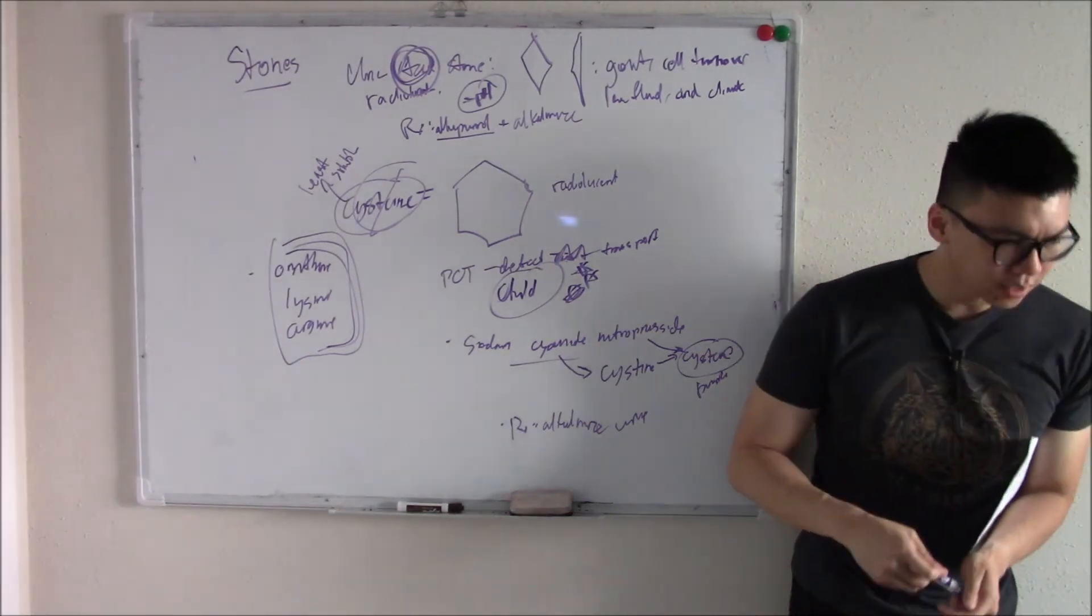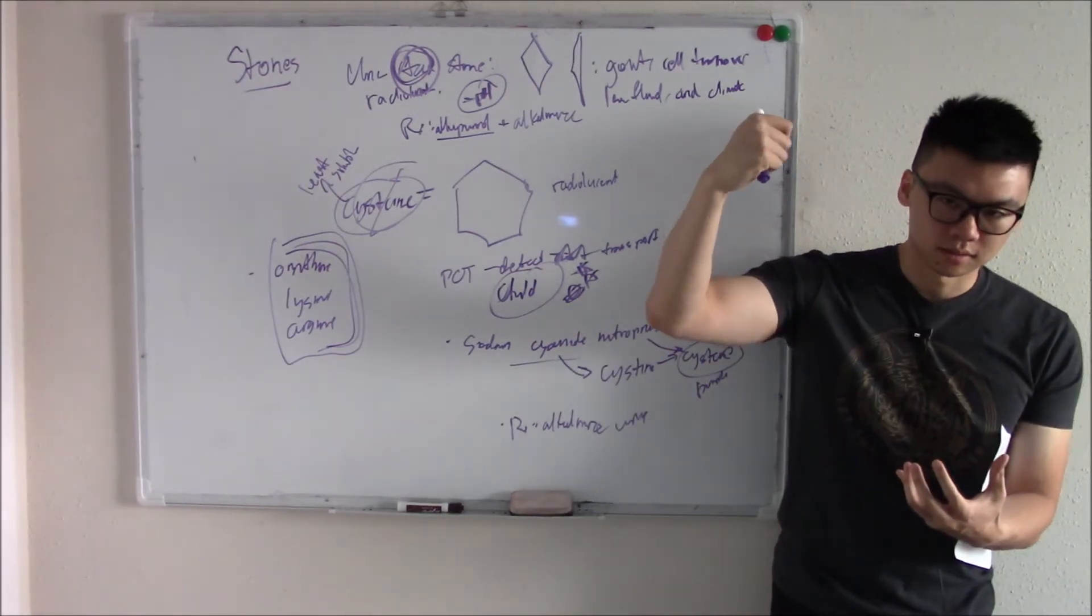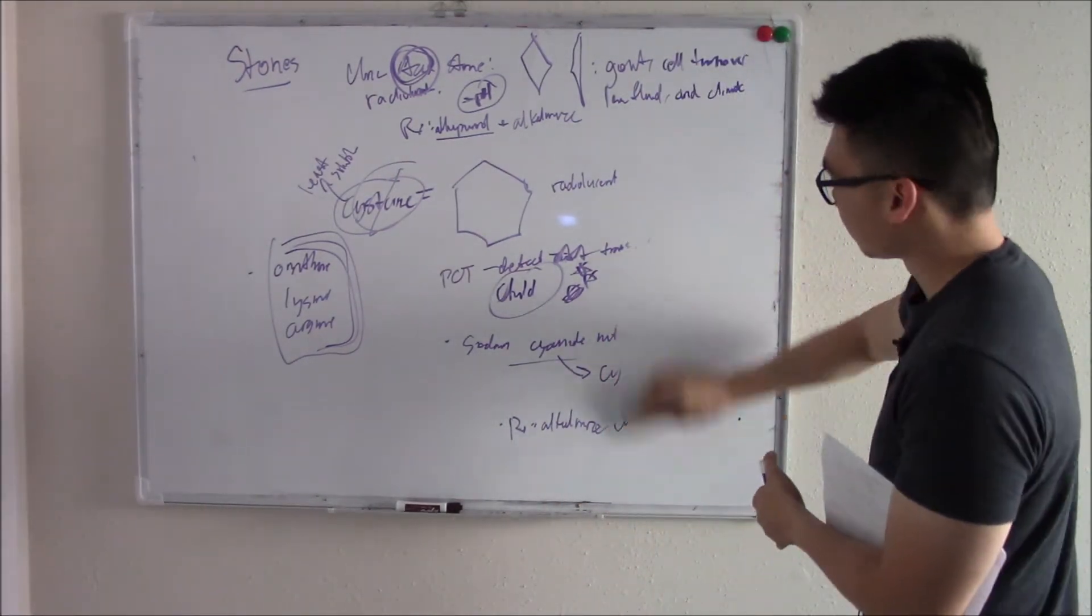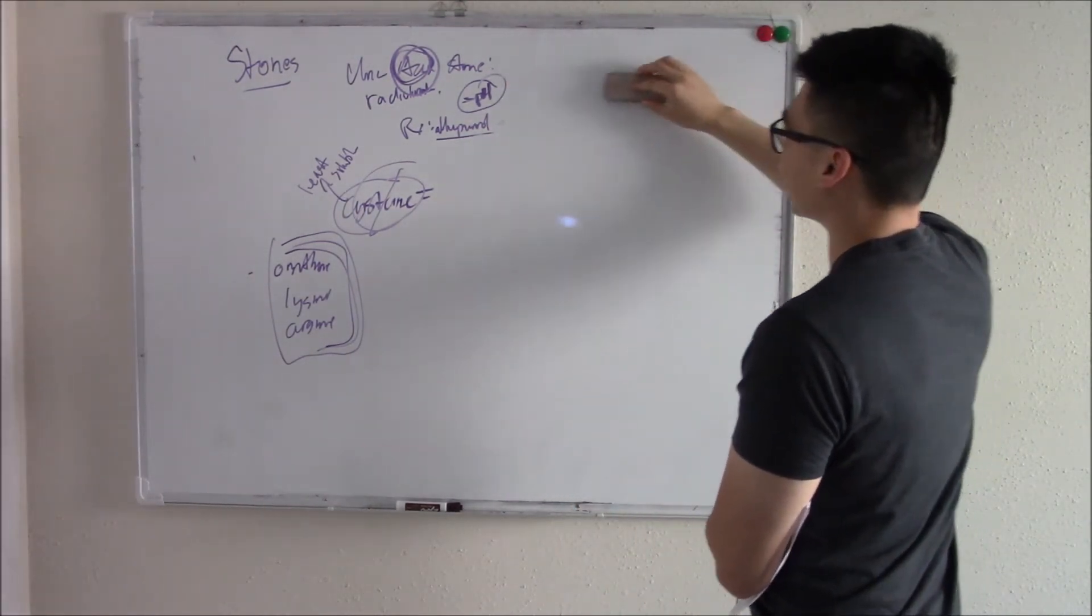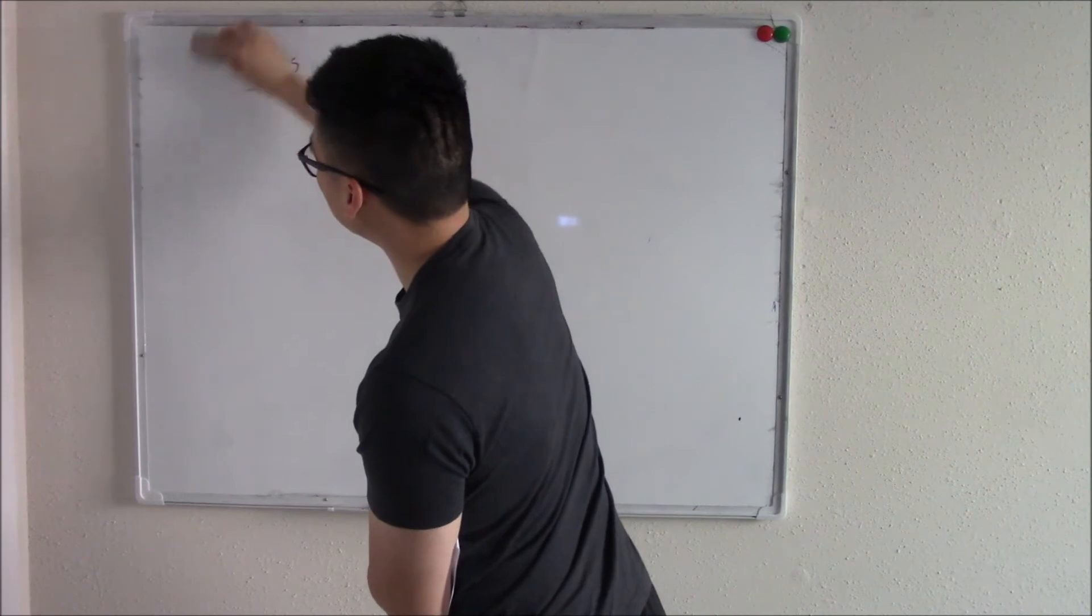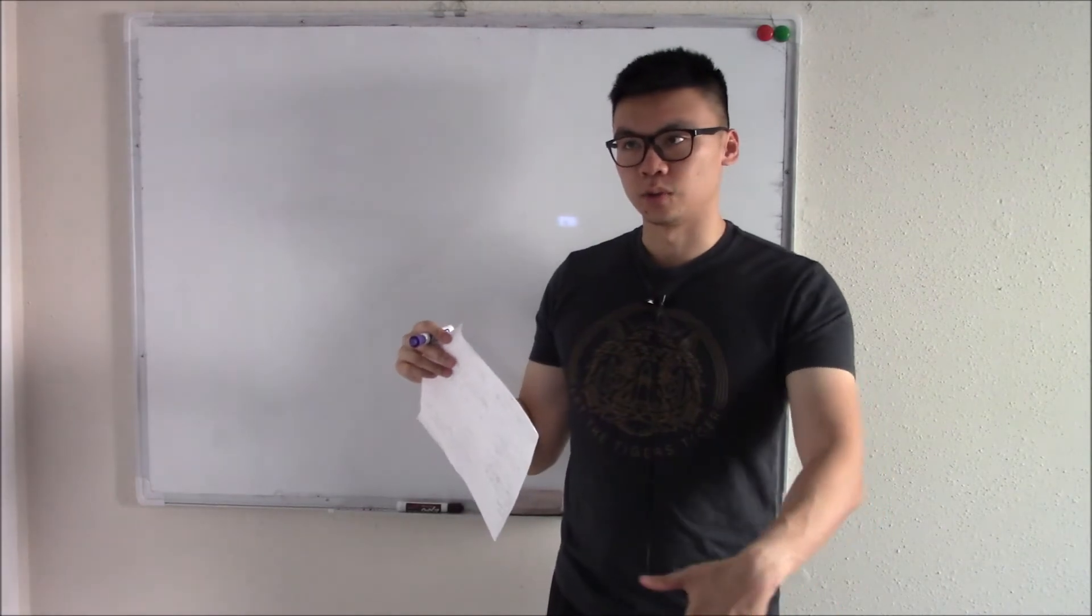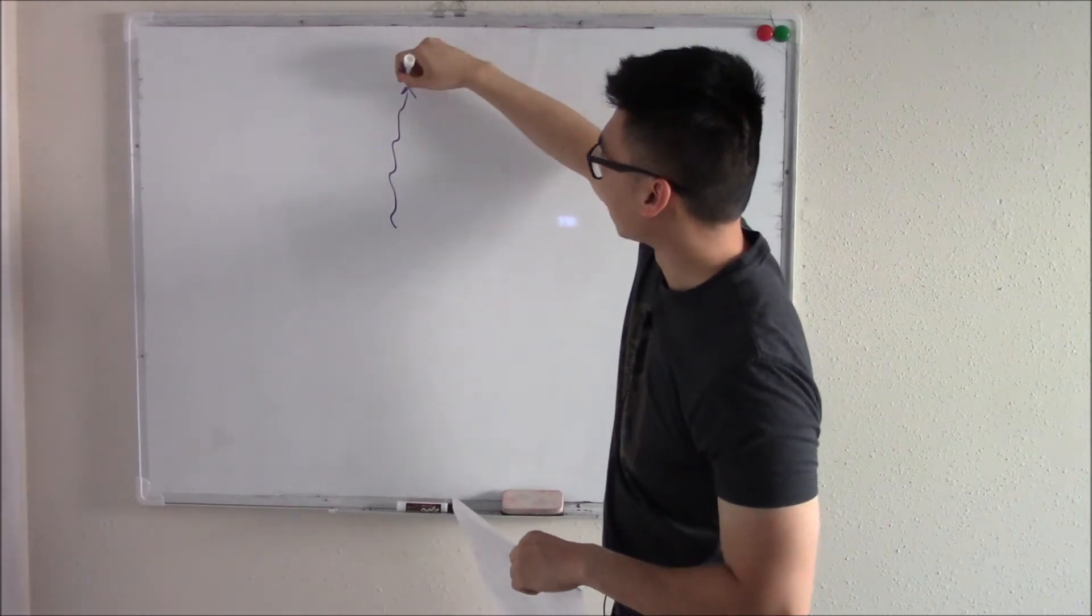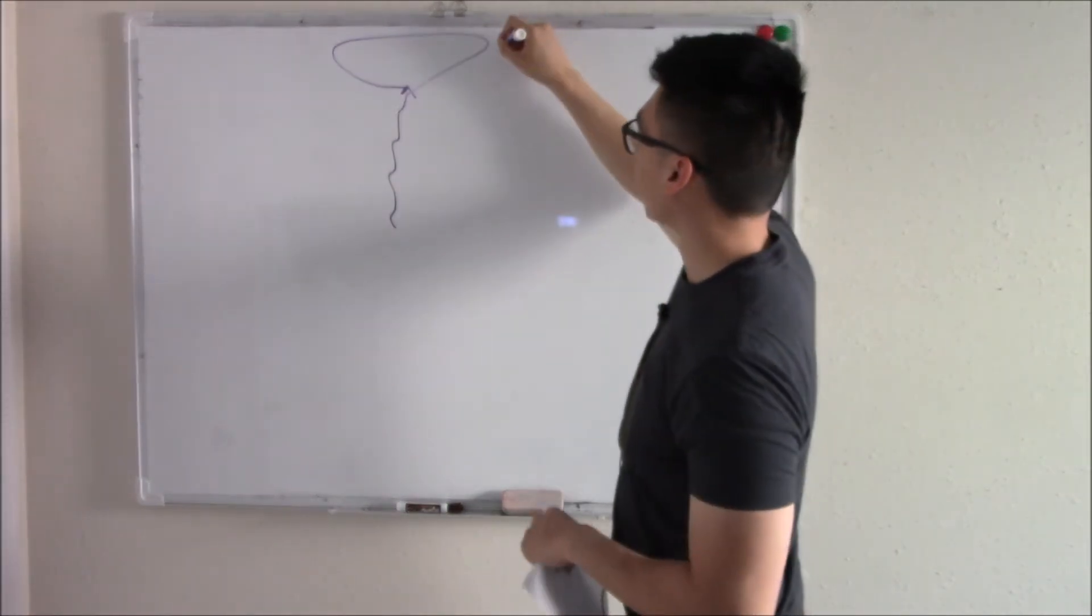Those are your stones. We're going to transition to our next topic, which is infections. We said stones cause an obstruction that can cause hydronephrosis that can predispose you to infections. You can get infections from other things that are not stones. The more common way is that bacteria from around your perianal region go up your urethra and start to travel up. We call these ascending infections.